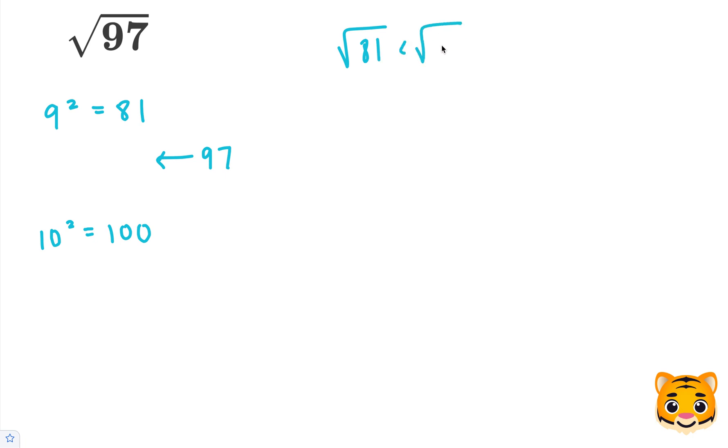The square root of 81 is less than the square root of 97, which is less than the square root of 100. We can write this because we know that 81 is less than 97, which is less than 100.